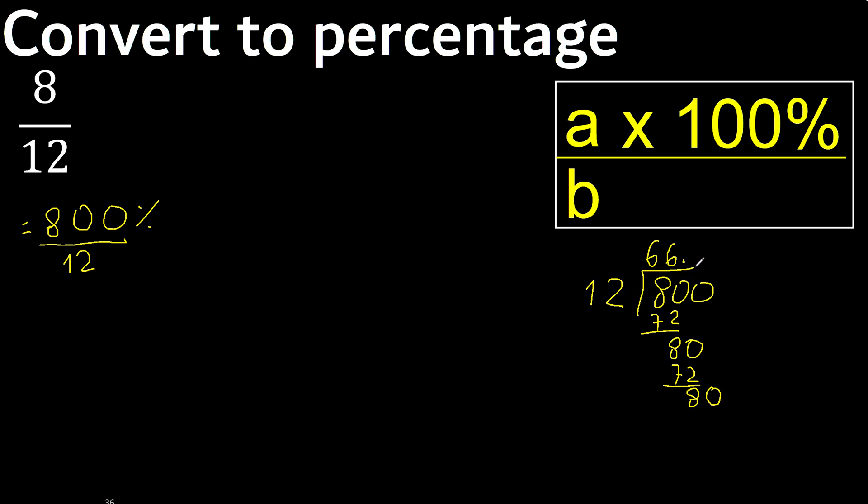12 multiplied by 6. Subtract. Complete, always complete with 0. 0, point. Point is here. 12 multiplied by 6. Subtract. Complete. 12 multiplied by 6.